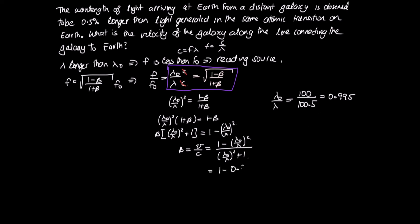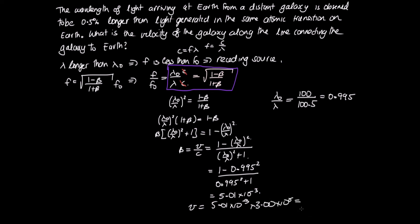Substituting into the expression for beta: beta equals (1 minus 0.995 squared) divided by (0.995 squared plus 1), which gives 5.01 times 10 to the minus 3. Therefore V equals beta times C, which equals 1.50 times 10 to the 6 meters per second. Since the question asks for velocity, we should also give the direction: away from Earth.